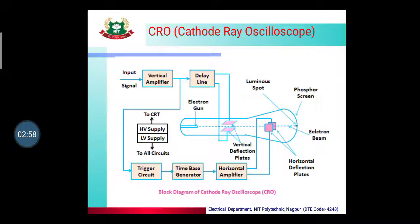Now for CRO, the horizontal deflection plates are connected with horizontal amplifier, time-based generator and trigger circuits. Similarly, you can see the whole system here. You can see an electronic beam.